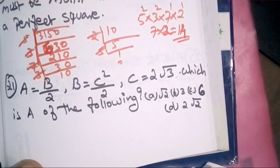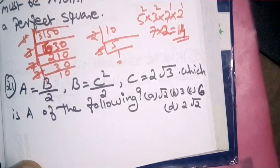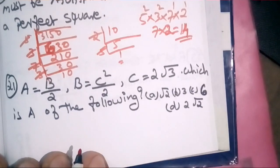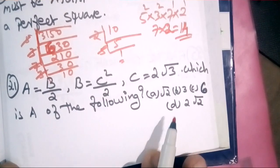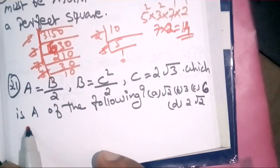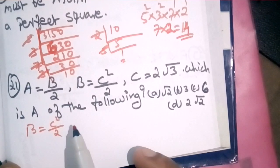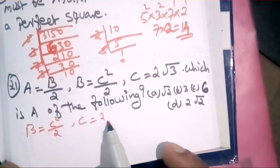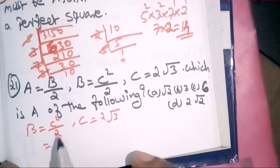Question number 21. A is equal to B divided by 2. B is equal to C square divided by 2. C is equal to 2 root 3. We substitute: C square divided by 2 equals C square divided by 2. With C equal to 2 root 3, C square divided by 2 equals 2 root 3 into root 3.